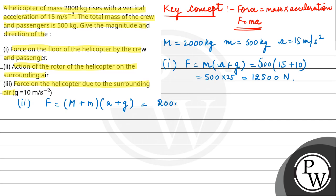So this becomes 2000 plus 500 into 15 plus 10, so this is equal to 2500 into 25 which is equal to 62,500 newton and this would be acting in vertically downward direction.